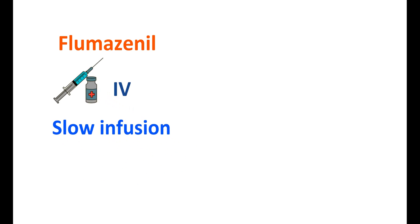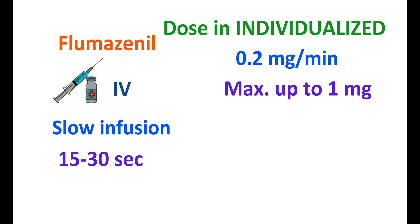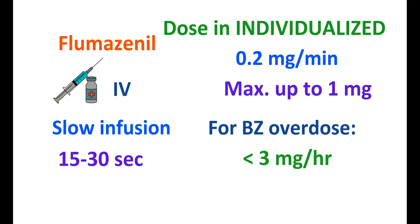Now let us know the doses of this medication. Flumazenil is given by intravenous route by slow infusion over 15 to 30 seconds, and the dose is individualized based on patient conditions. Typically it can be given at an infusion rate of 0.2 mg per minute. After one minute, a repeated dose can be given if no response is observed, but the maximum dose is up to 1 mg for controlling sedation. For treating Benzodiazepine overdose, again it can be given at 0.2 mg per minute and the maximum accumulated dose should be less than 3 mg per hour. Flumazenil should not be used for more than 4 consecutive doses.